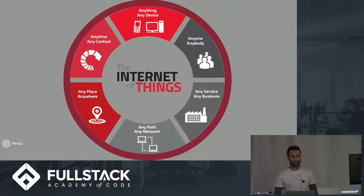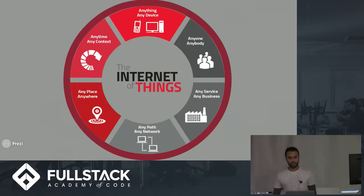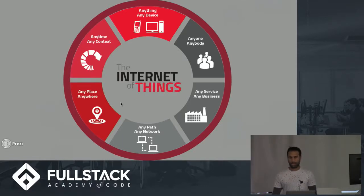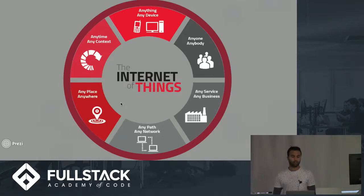To define IoT: IoT uses embedded technology to communicate and interact with the external environment, with each other via the internet, and also with people. Unlike current connected devices like your laptop, smartphones, or tablets, IoT has translated this form of physical atmosphere and basically forms an interwoven connected network where everything is connected to everything. That's why they call it the Internet of Things.